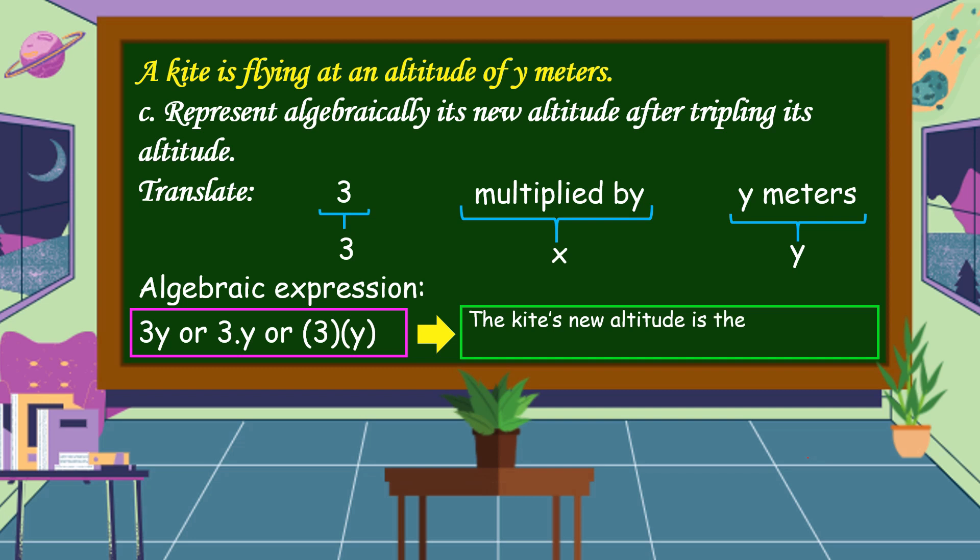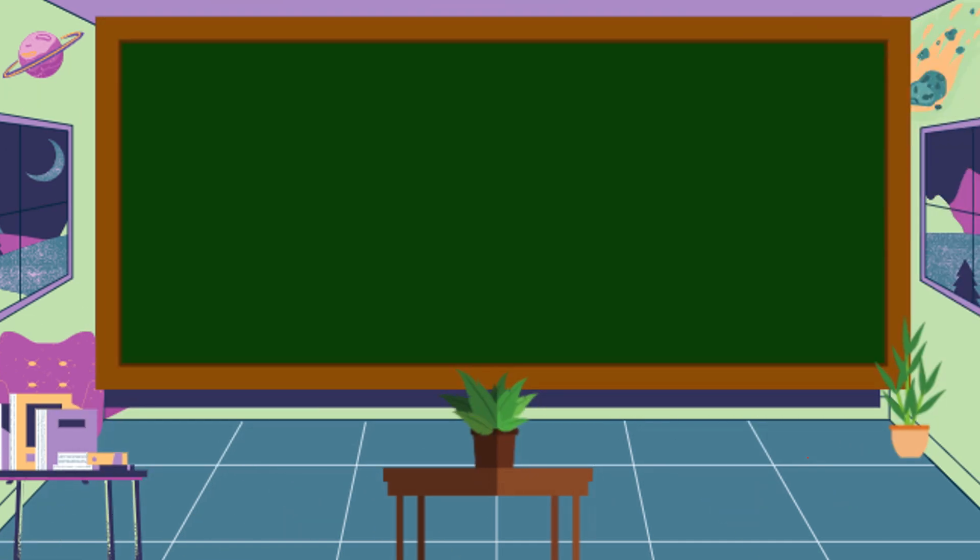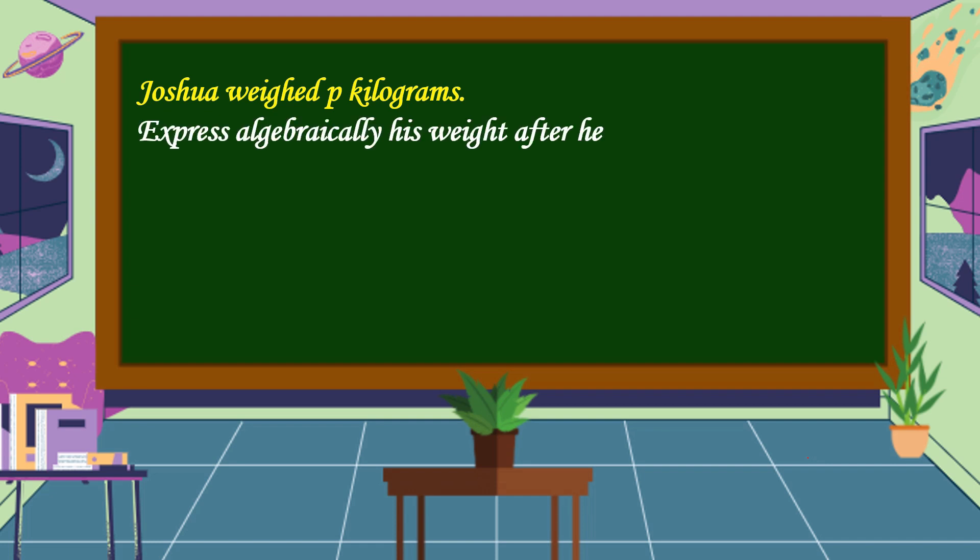Another example: Joshua weighed p kilograms. Express algebraically his weight after he gained 5 kilograms. Let's translate: p kilograms, we use p. After he gained, that is increased by, we use the addition symbol. 5 kilograms is 5.